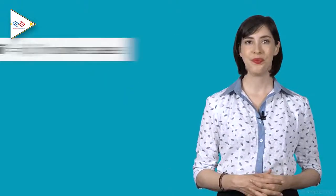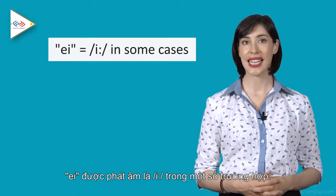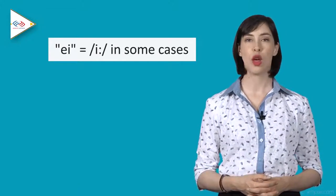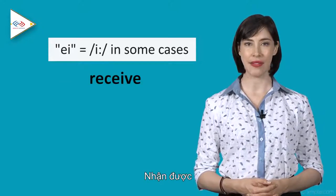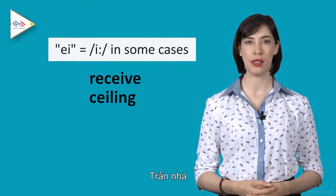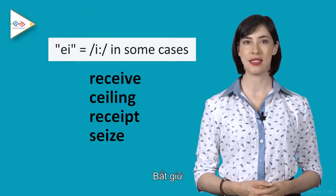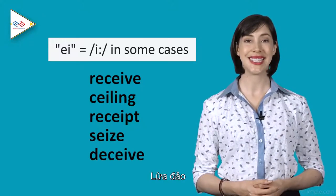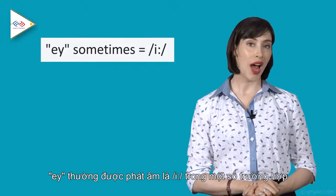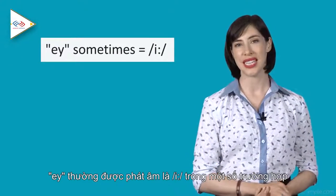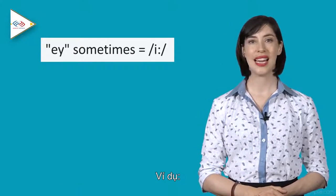Number four: EI is pronounced as a long E in some cases. For example: receive, ceiling, receipt, seize, deceive, senior. EY is sometimes pronounced as a long E. For example: key.